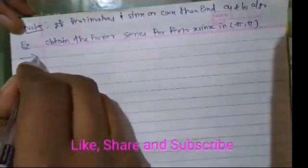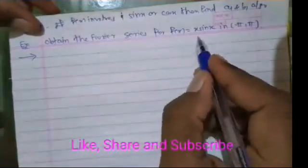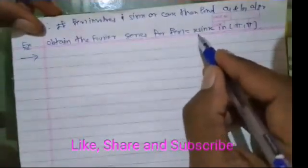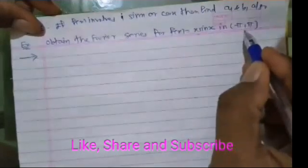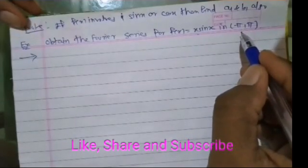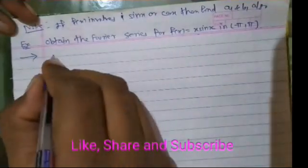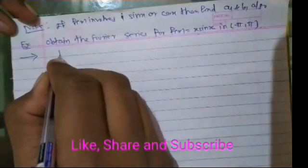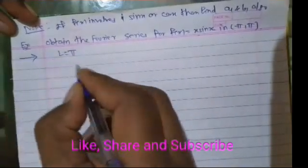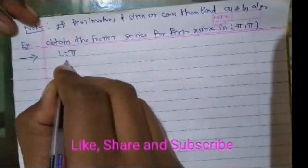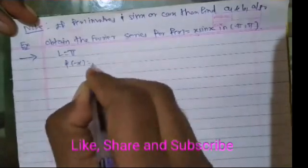Now we will start the solution. f(x) = x·sin(x) is given, and we have to find the Fourier series of x·sin(x) in the interval minus pi to plus pi. The interval is minus pi to plus pi, so l = pi. We have to check whether the given function is even or odd, and we do that by putting x equal to minus x.